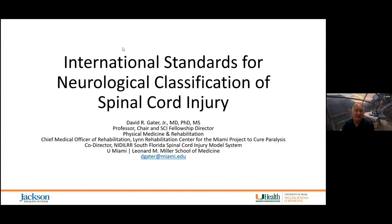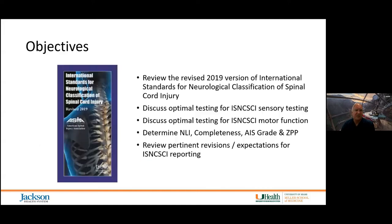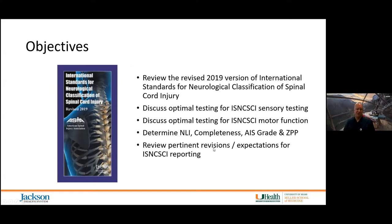Good afternoon. I'm going to be continuing with our spinal cord injury clinical series lectures. Today we're talking through the International Standards for the Neurological Classification of Spinal Cord Injury — the ISNCSCI test, also referred to as the ASIA scoring system, where ASIA stands for American Spinal Injury Association. My objectives are to review the revised 2019 version of the ISNCSCI exam, discuss optimal testing for sensory and motor scores, determine level and completeness of injury, assign an ASIA Impairment Scale and zone of partial preservation, and review pertinent revisions.